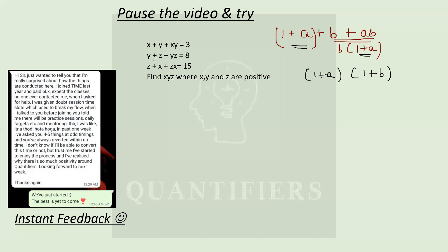Now let us come to the question. You can see I have similar types of equations. On adding one to the first equation — adding one on both the left-hand side and right-hand side — I can directly write it as one plus X into one plus Y, which equals three plus one, that is four. Similarly, adding one to the second equation gives one plus Y into one plus Z, which equals nine. And adding one to the third equation gives one plus Z into one plus X, which equals 16.